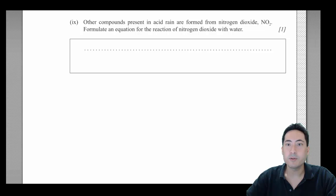Other compounds present in acid rain are formed from nitrogen dioxide. Formulate an equation for the reaction of nitrogen dioxide with water.